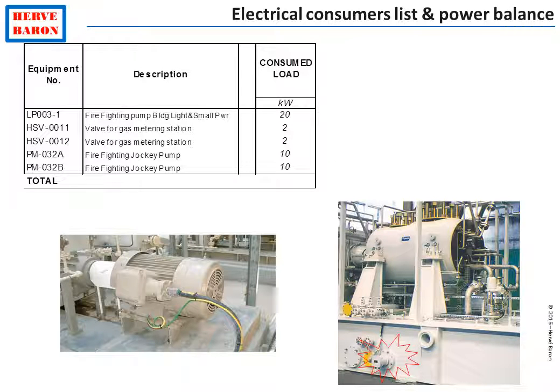The starting point of the electrical engineer is to draw the electrical consumers list. It consists of making an exhaustive inventory of all plant electric power consumers. These include obvious process consumers such as pumps, as well as some hidden consumers such as a lube oil heater inside a compressor package.